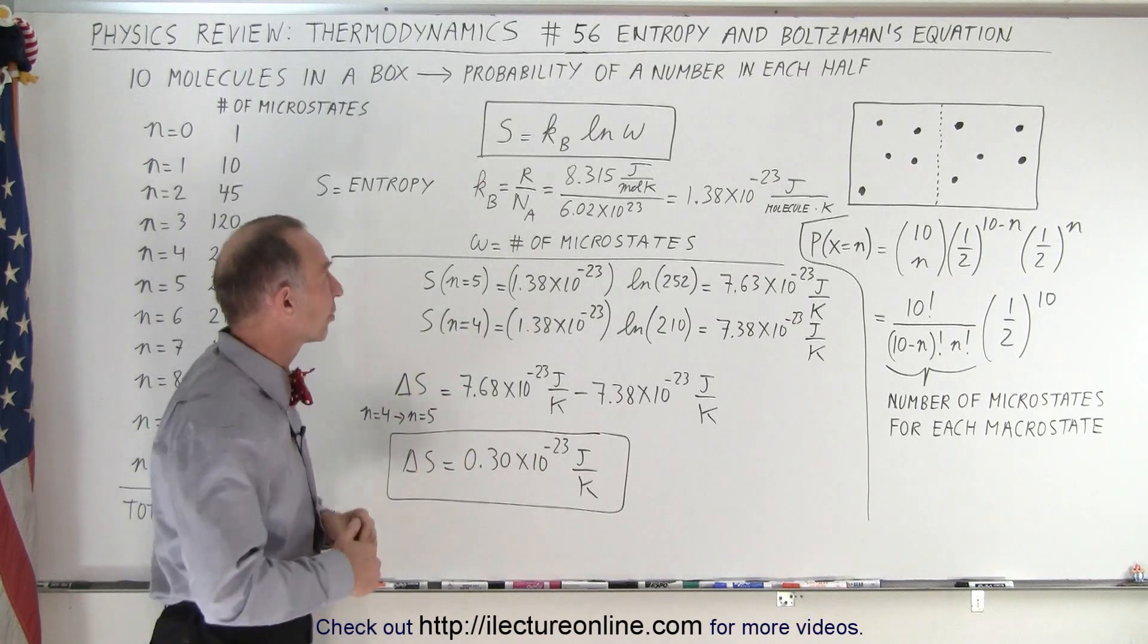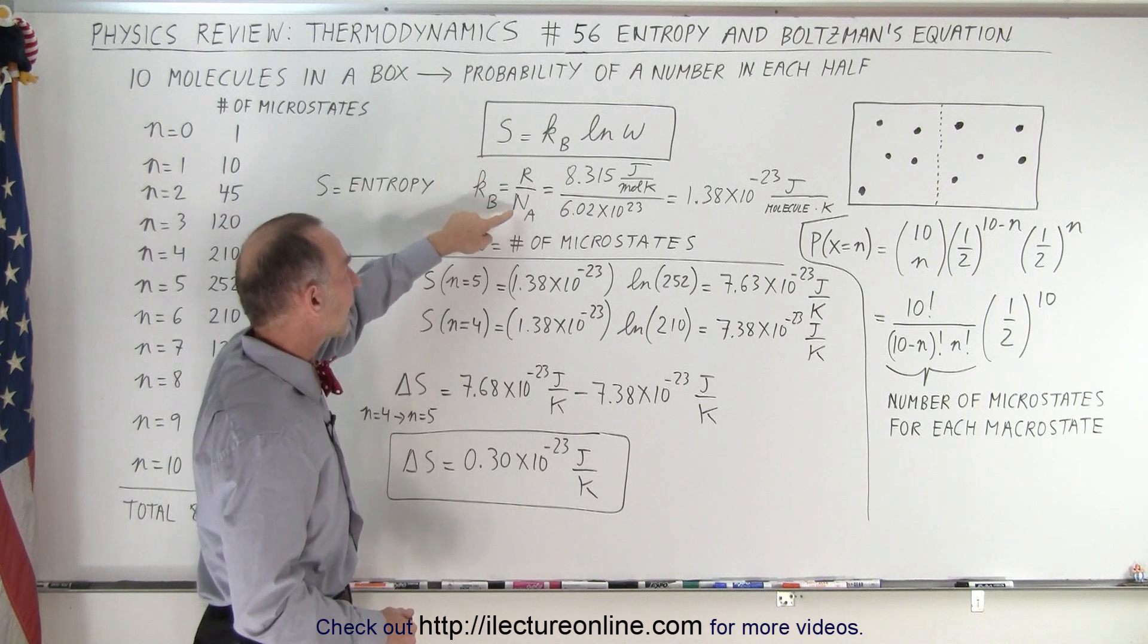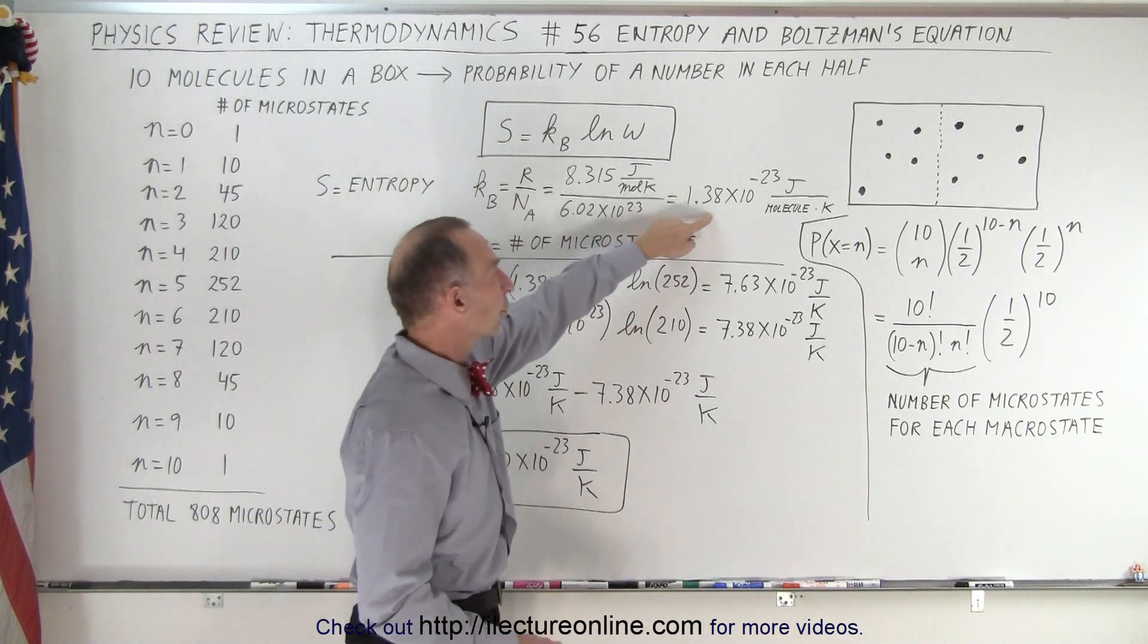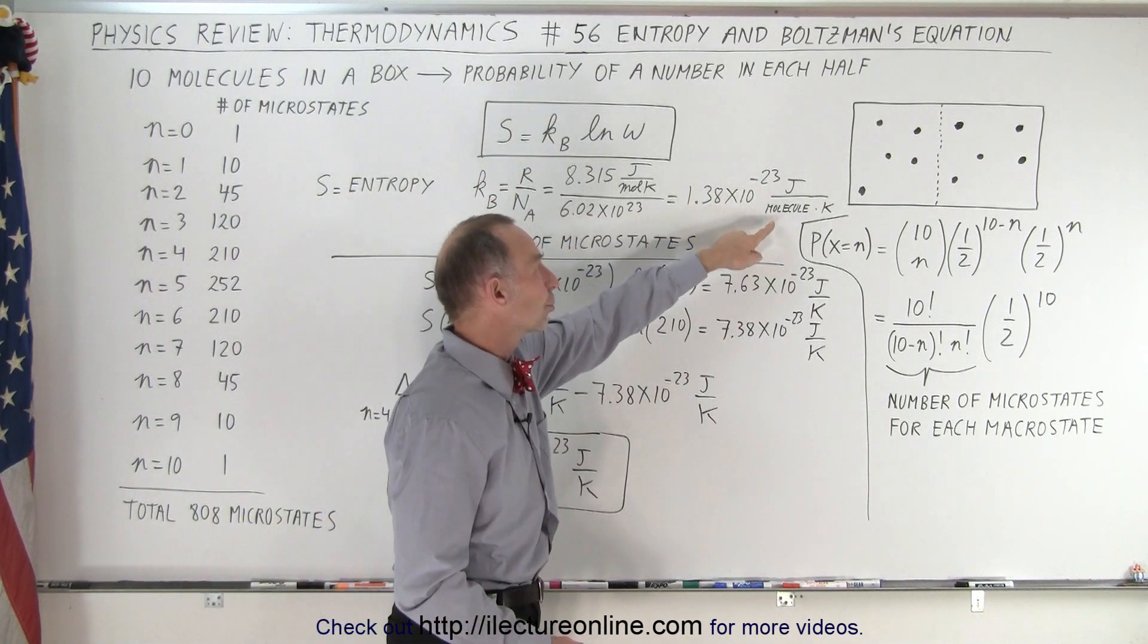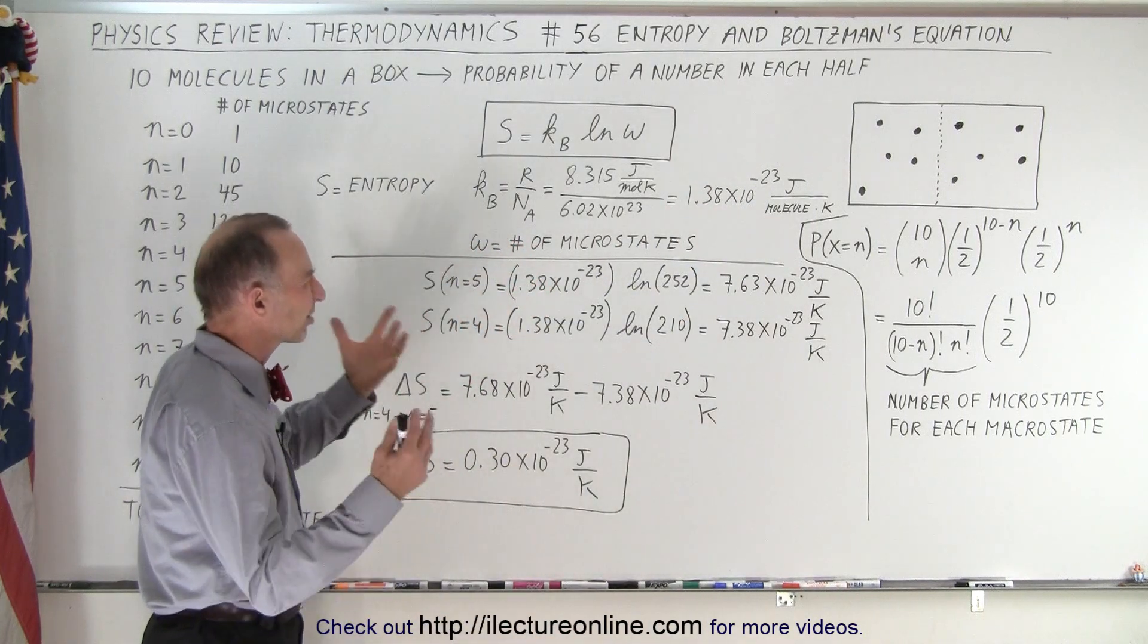It's the number of microstates. So S stands for entropy. The Boltzmann constant is the gas constant divided by Avogadro's number, 1.38 times 10 to minus 23 joules per molecule per kelvin. And w or omega stands for the number of microstates.